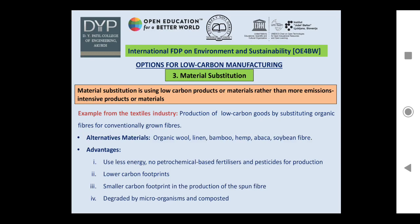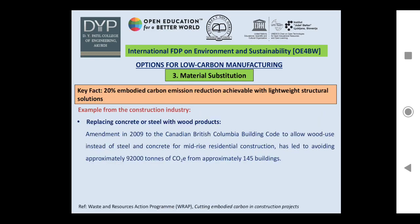Advantages of using these natural fibers include: they use less energy, require no photochemical-based fertilizers and pesticides, have lower carbon footprints in the production of spun fiber, and are easily degradable by microorganisms and compostable. In the construction industry, a 20% embodied carbon emissions reduction is achievable with lightweight structural solutions. Replacing concrete or steel with wood products — as enabled by a 2009 amendment to the Canadian British Columbia building code — has led to avoiding approximately 92,000 tons of CO₂ equivalent from approximately 145 buildings.